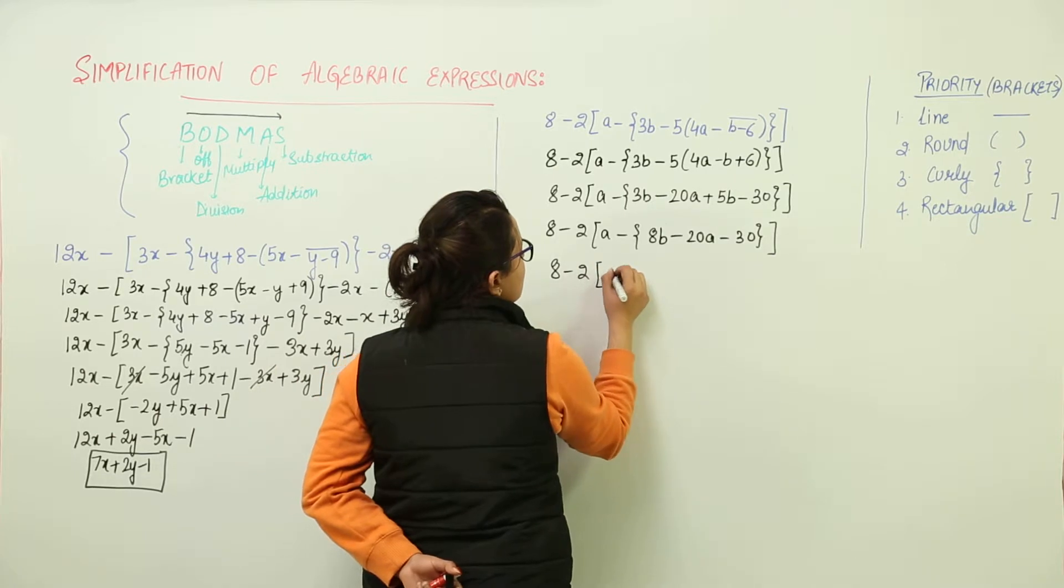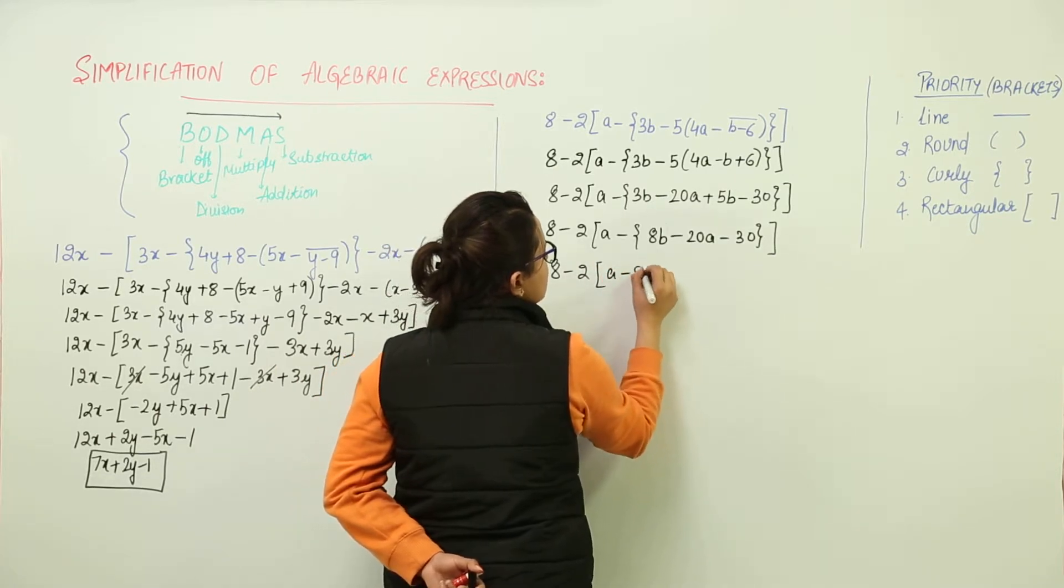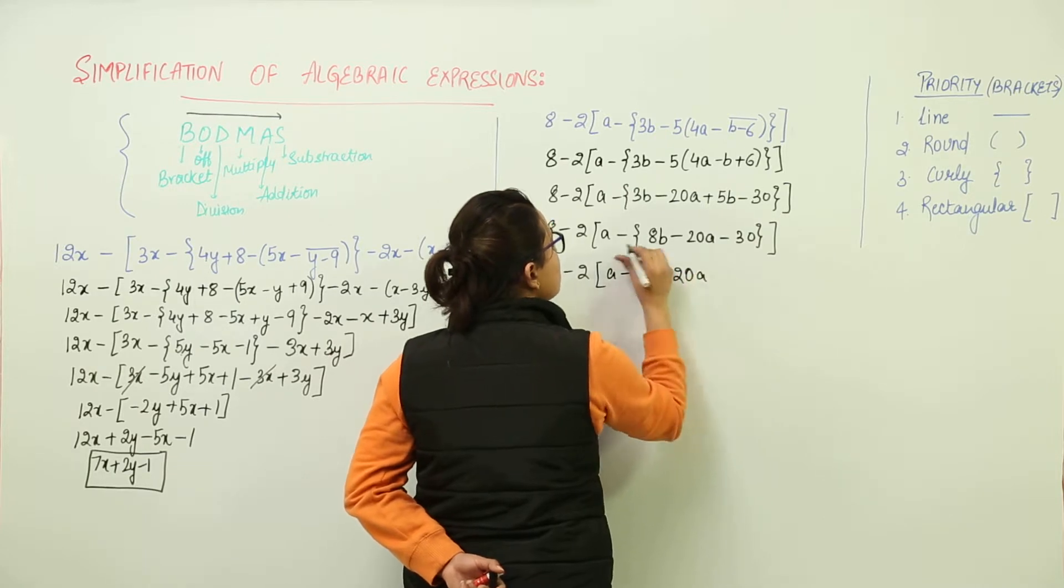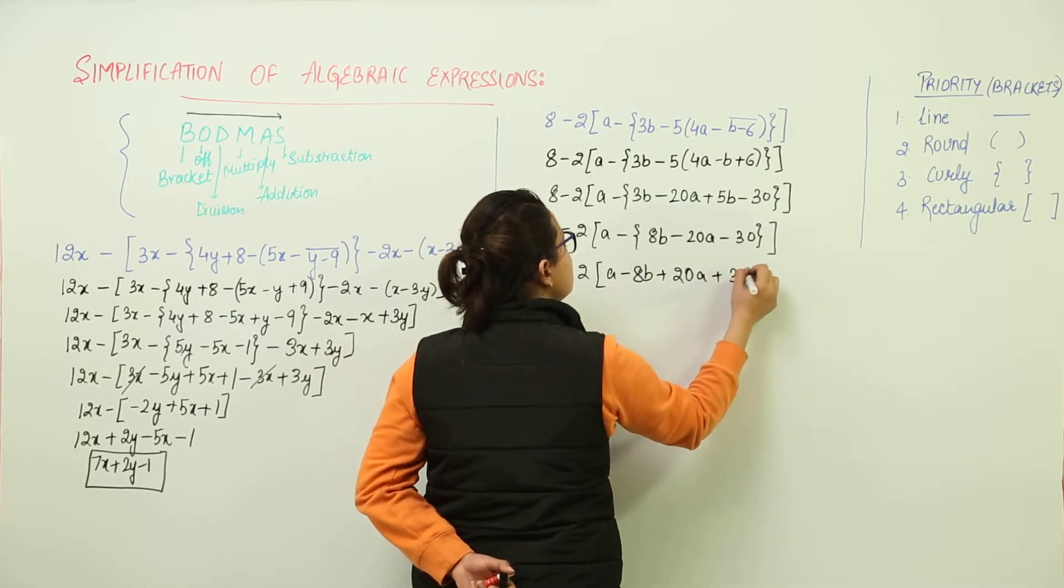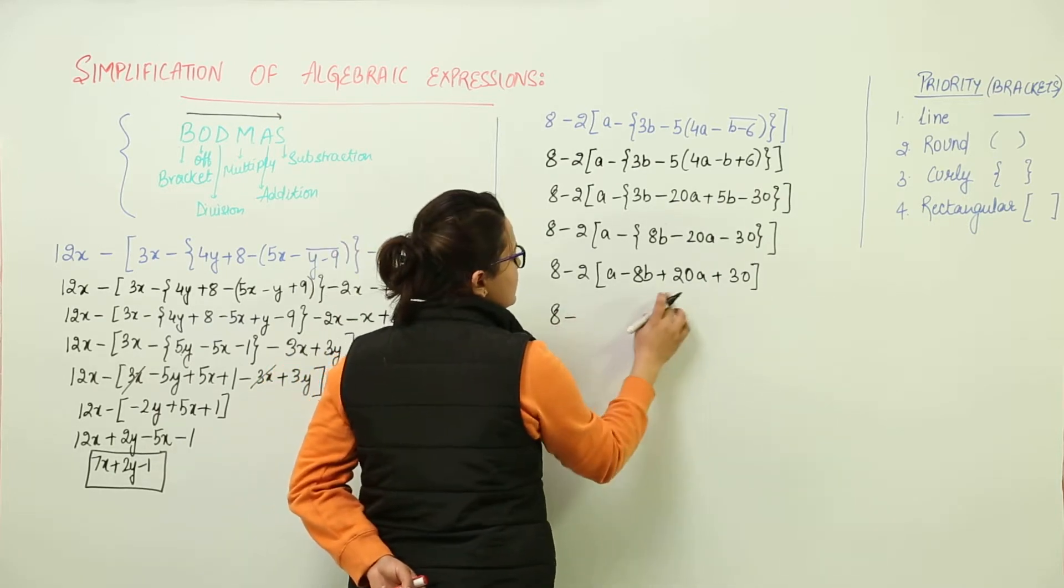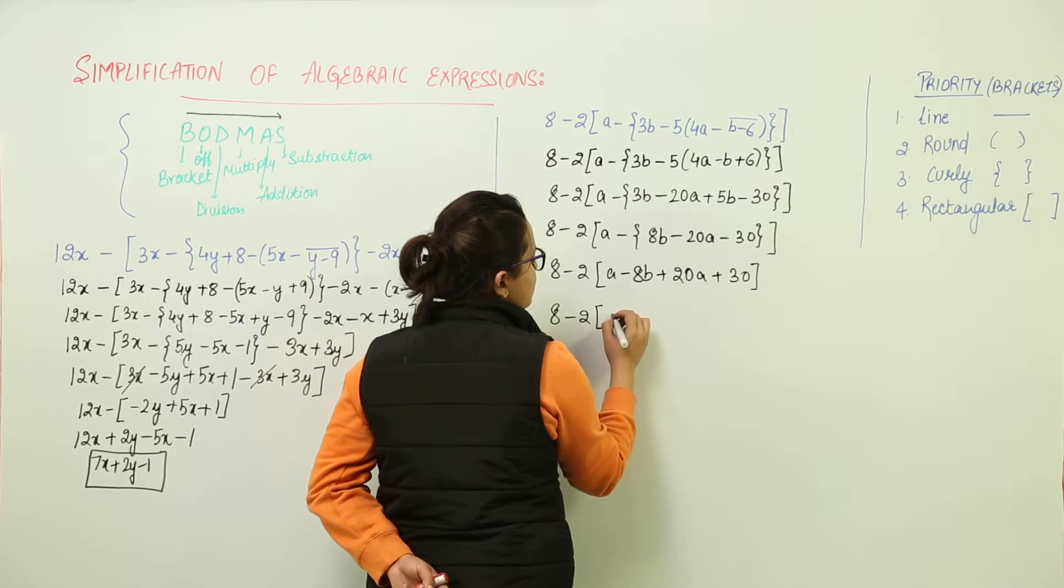Now we are going to open the curly bracket. 8b minus minus plus 20a minus minus plus 30. What's the next step? The next step is to simplify this if possible. Yes we can simplify it.